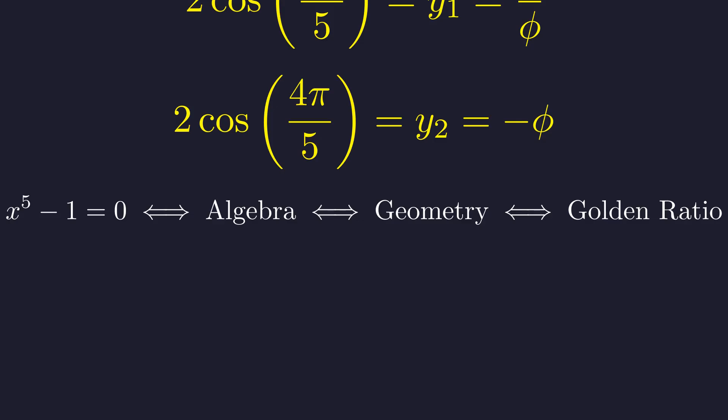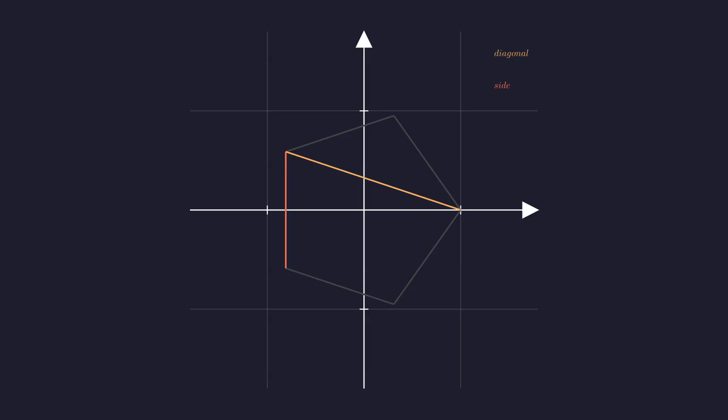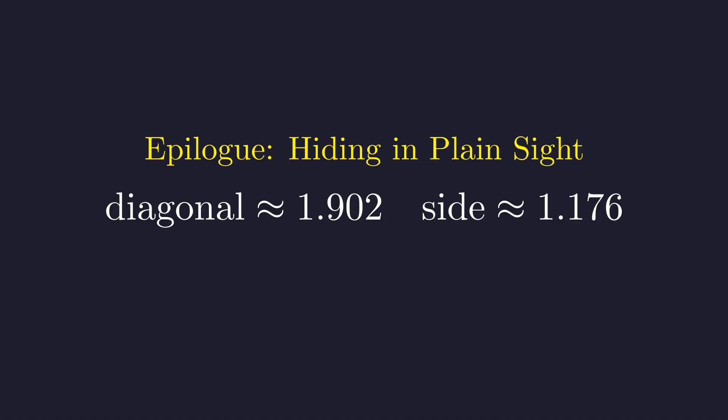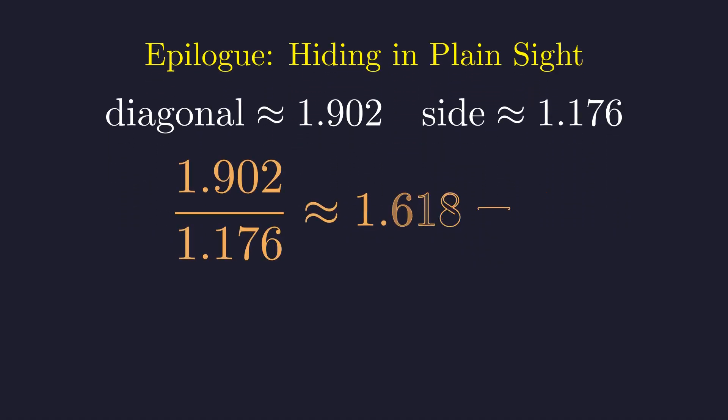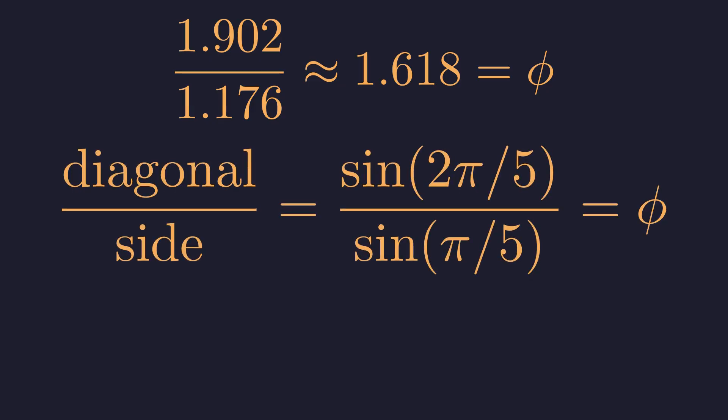But wait! There's one more surprise hiding in plain sight. We found the golden ratio buried deep within the algebra of the roots, but it was also hiding in plain sight all along in the very shape we created. Consider the regular pentagon formed by our roots. Let's examine the ratio of a diagonal length to a side length. Using our calculated coordinates, the diagonal length is approximately 1.902 and the side length is approximately 1.176. The ratio is approximately 1.618. Exactly the golden ratio. The geometry confirms our algebra. That ratio is exactly the golden ratio, a fact that can be proven using the very trigonometric identities we derived.